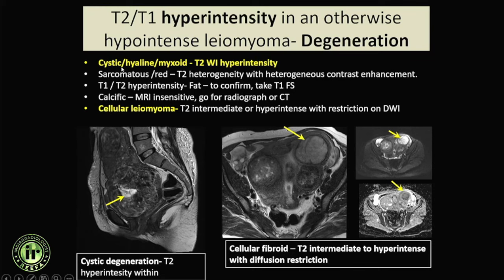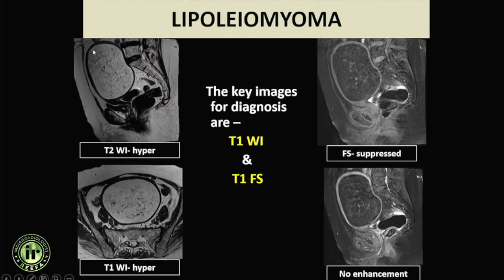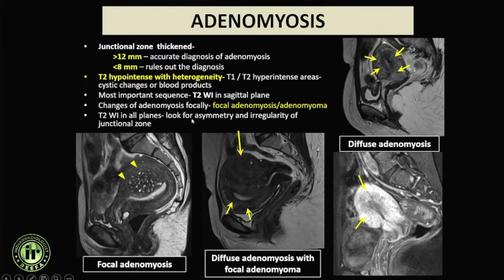The most common degenerations are cystic and hyaline, appearing heterogeneous on T2-weighted sequences with a whorled pattern and T2 hyperintense areas. More cellular fibroids are more hypointense on T2. Fibroids can contain fat, so plain T1 sequences are important before contrast; fat-suppressed sequences confirm fat content, making it a lipoleiomyoma.